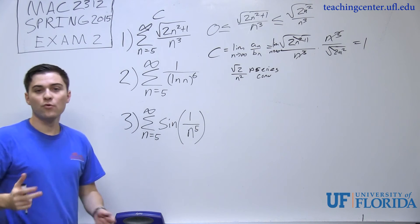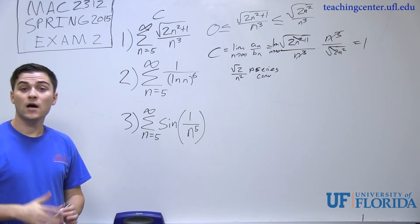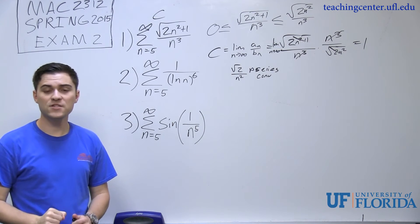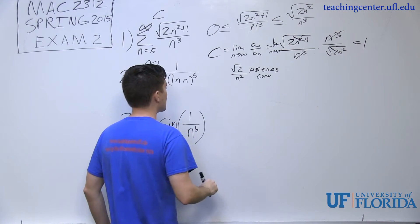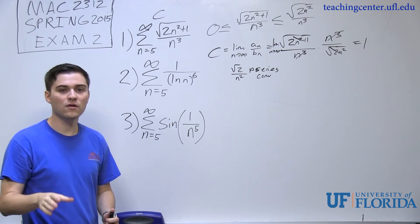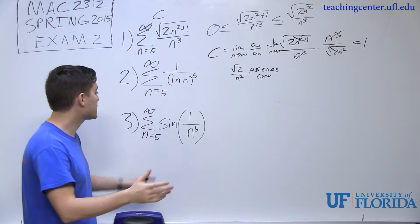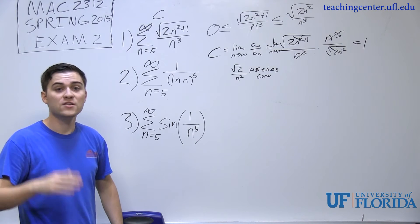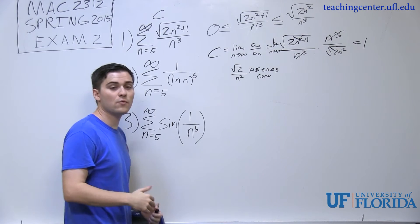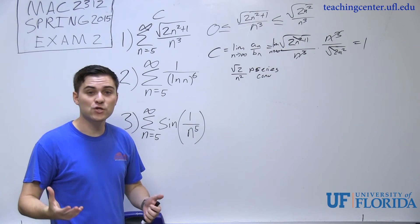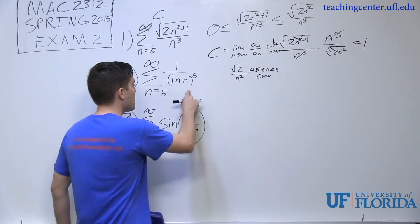For number two, we have 1/ln(n)⁶. I'm going to use a comparison test again. My assumption is that this series is going to diverge, because the natural log of n grows slower than any power of 1/n. Since it grows slower than 1/n, and 1/n is a divergent harmonic series, this should also diverge.